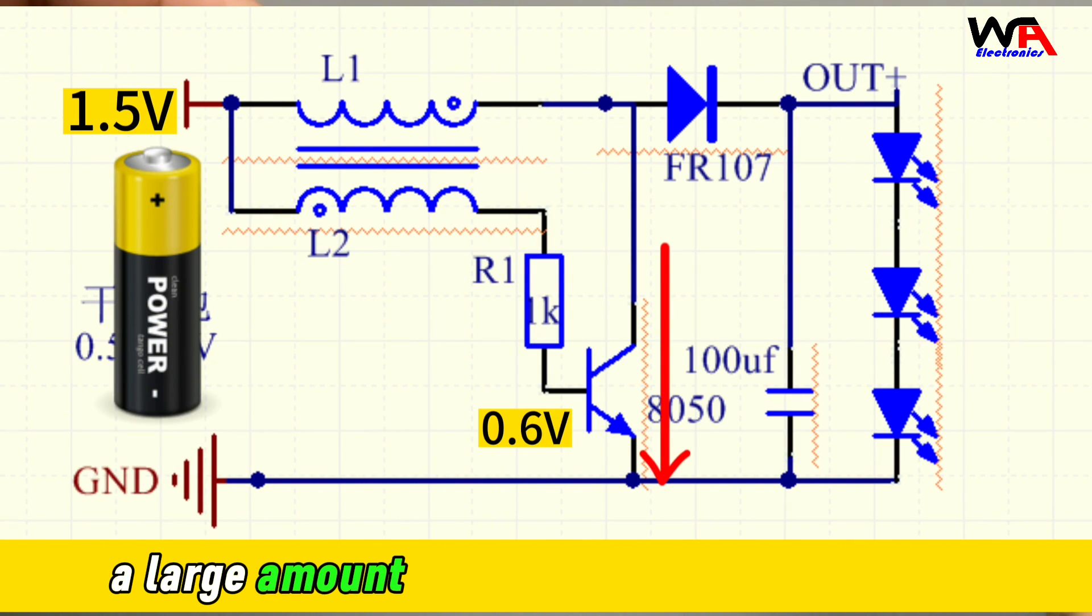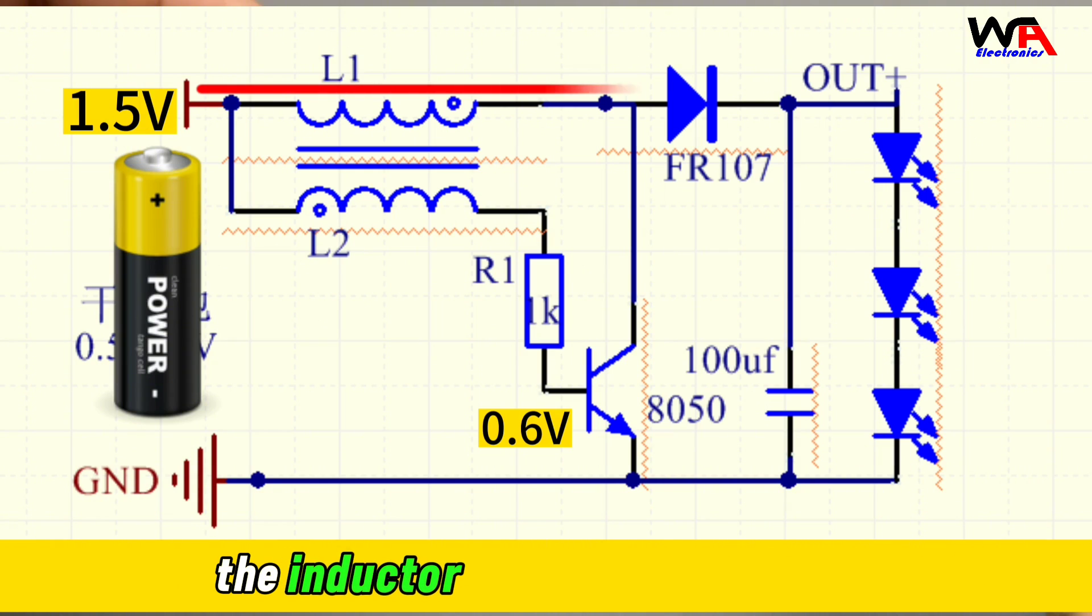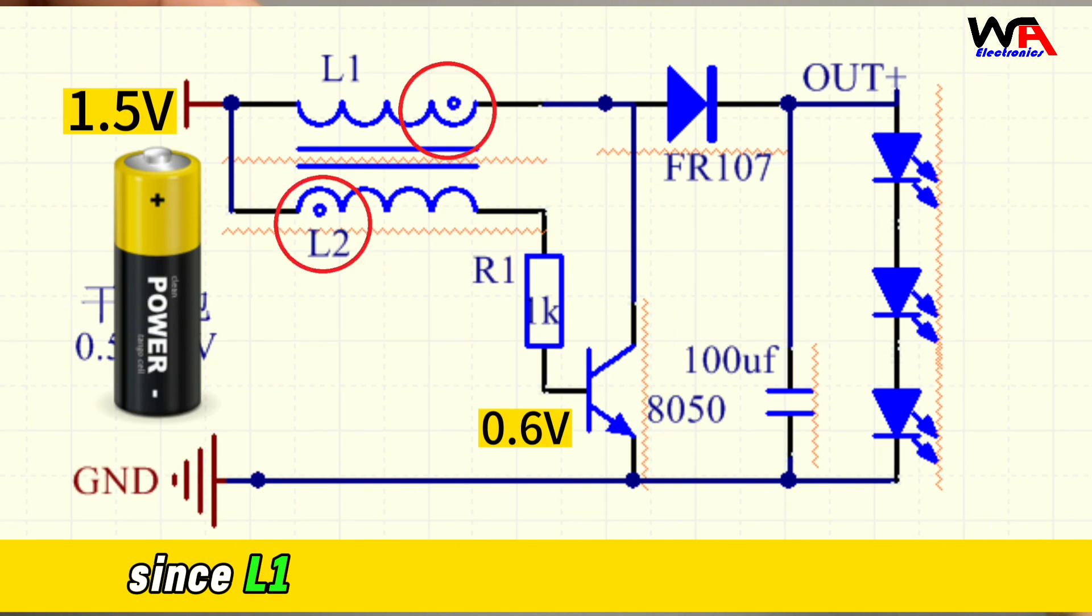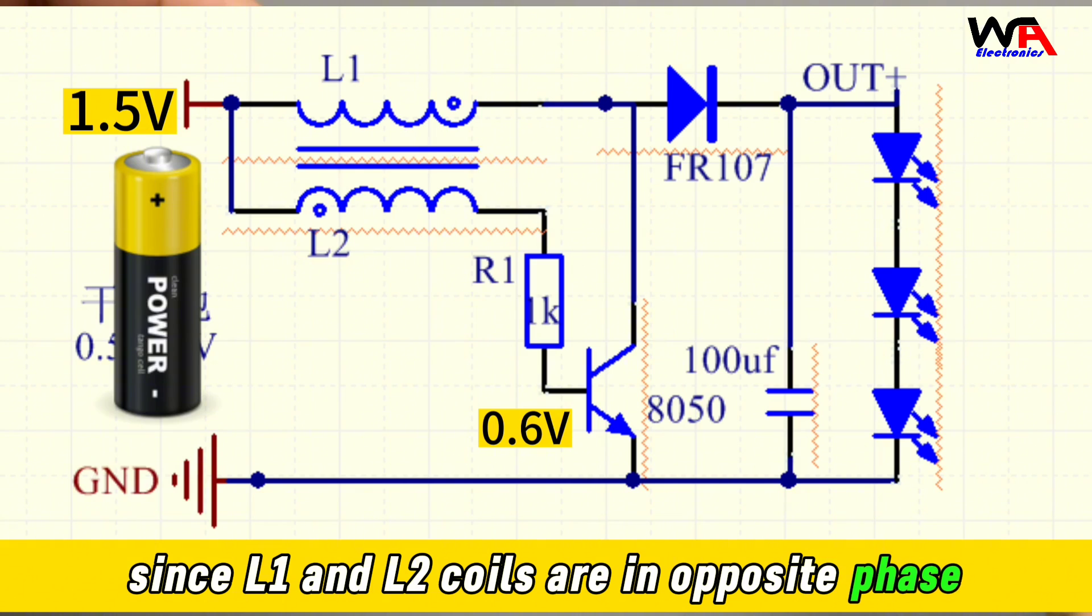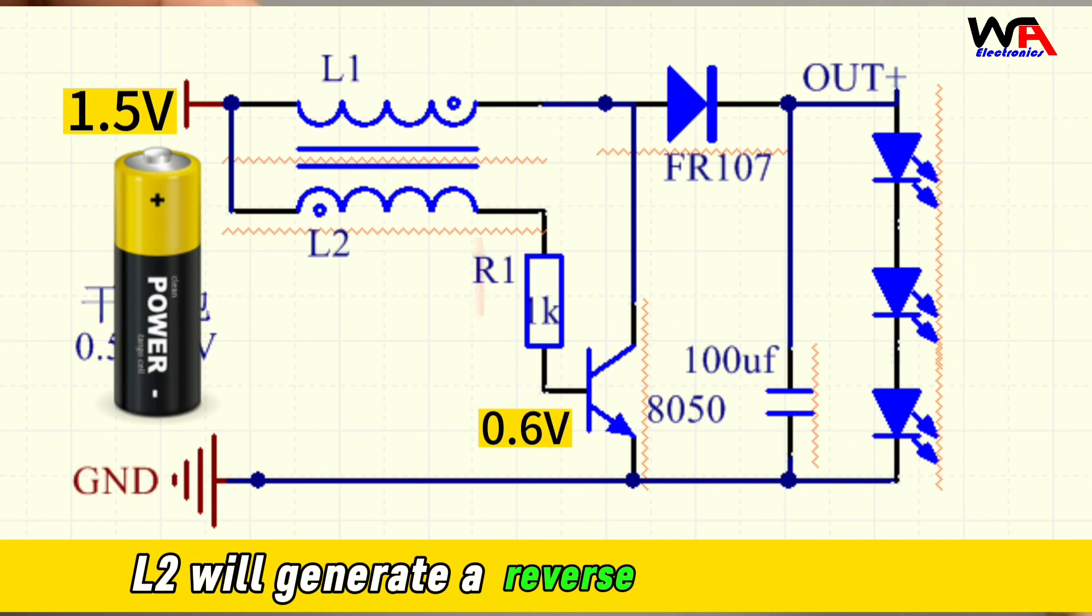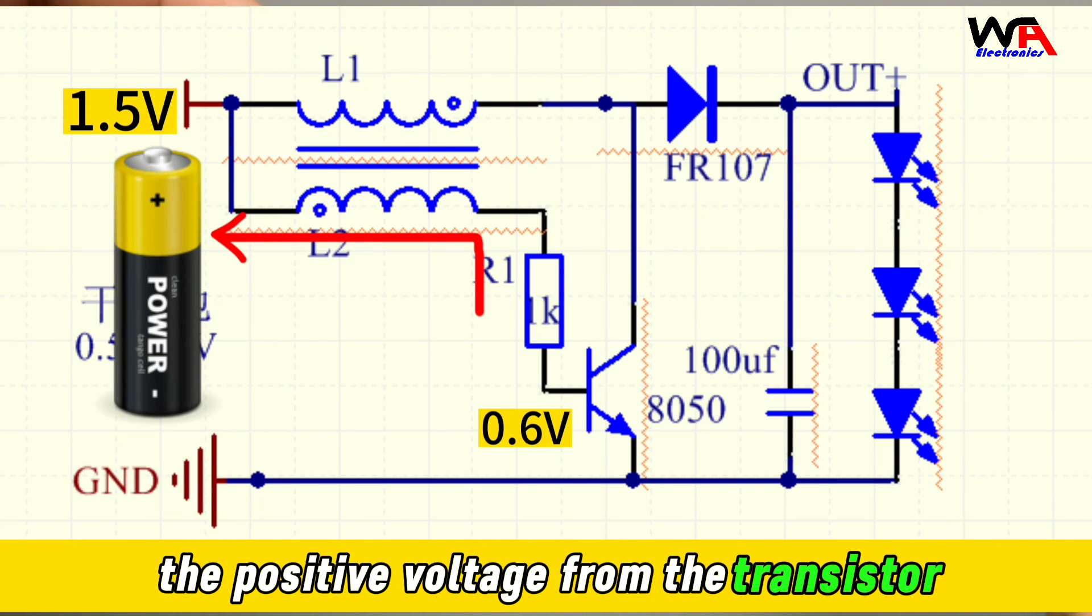At this point, a large amount of current is flowing through inductor L1 and the transistor. Since L1 and L2 coils are in opposite phase, L2 will generate a reverse current to draw the positive voltage from the transistor.